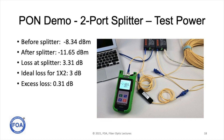When we tested the other port, we got 3.58 dB, or an excess loss of 0.58 dB. Part of that is the excess loss of the splitter, and part is the fact that the splitter isn't exactly 3 dB. These are the kinds of things we need to test when testing a passive optical network to know how it's operating and whether the splitter is working as it should.